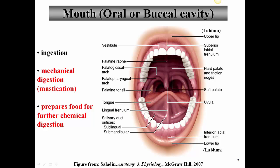Inside the lips we see the gums, which are the gingiva. We'll talk about these in connection with the teeth. Inside the oral cavity on the bottom we see the tongue. Below the tongue we see the lingual frenulum, and down here are openings for salivary glands — two in particular, the sublingual and the submandibular salivary glands, which we'll talk about in a little while.